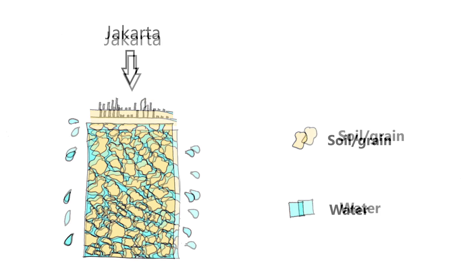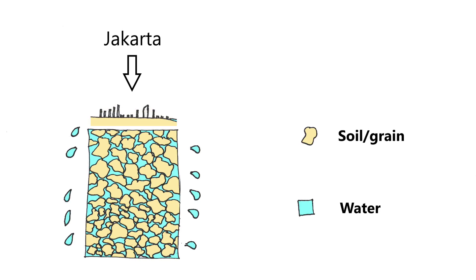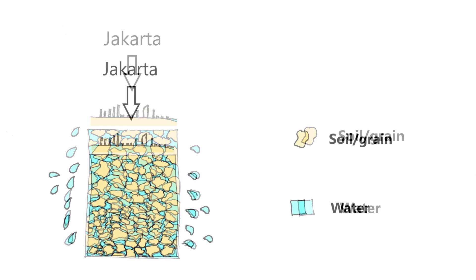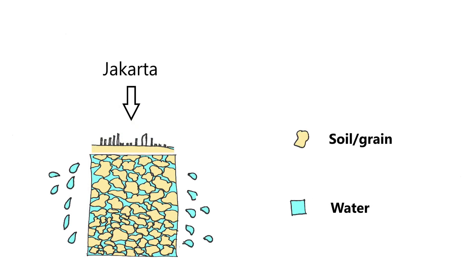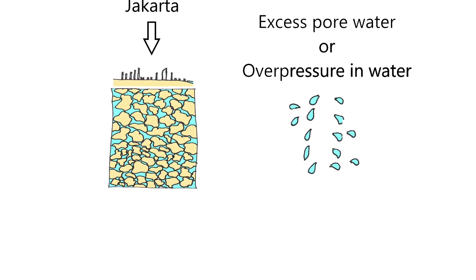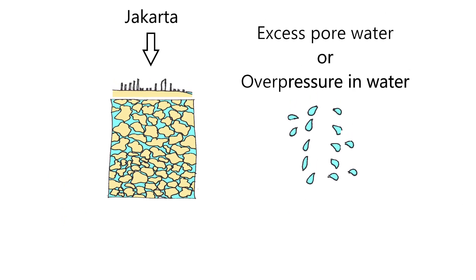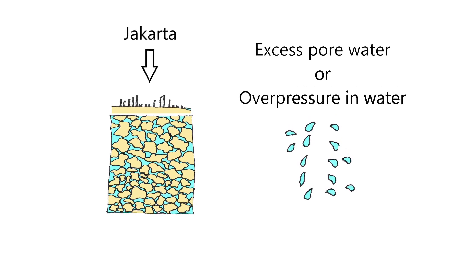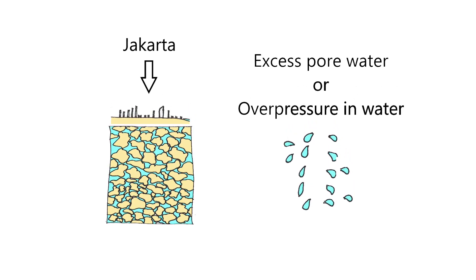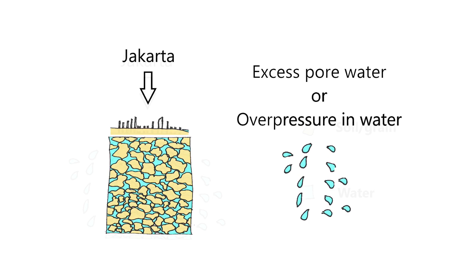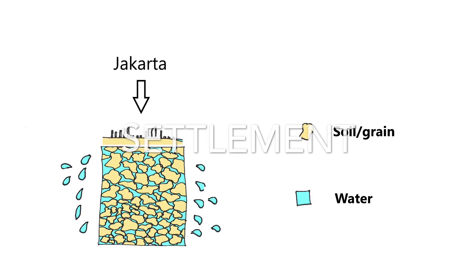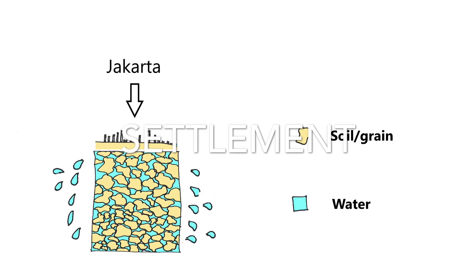A consequence is that soil grains are squeezed closer together and some of the water is squeezed out. The water that is squeezed out is called excess pore water pressure by geotechnical engineers, or we could call it overpressure in the water due to the weight increase. This loss of water between the grains is called settlement.